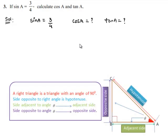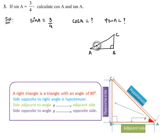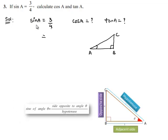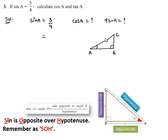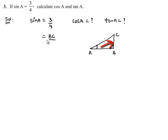For this, let us consider a right angle triangle ABC, which is right-angled at B, with angle A and angle C as the angles of the triangle. He has given that sinA is equal to 3 by 4, which is the ratio of the opposite side to the hypotenuse. Here, the opposite side of angle A is BC and the hypotenuse is AC.